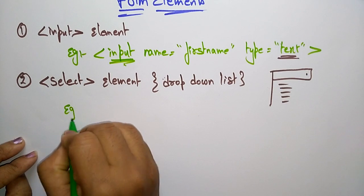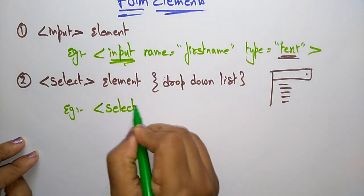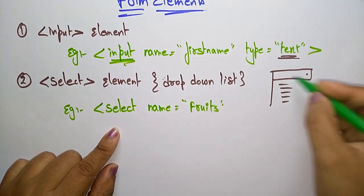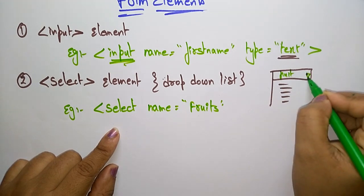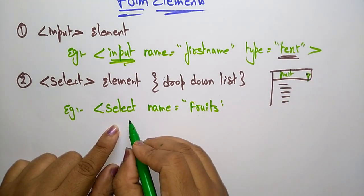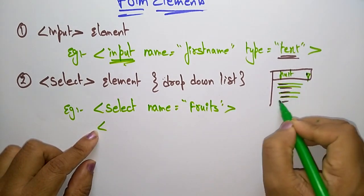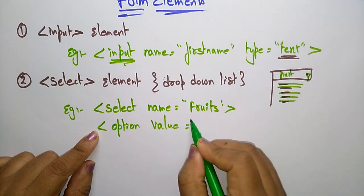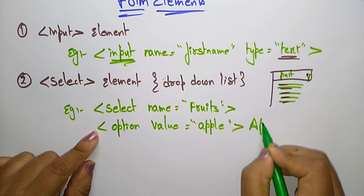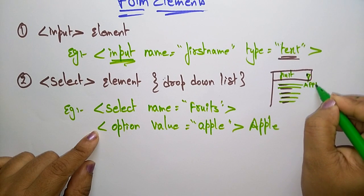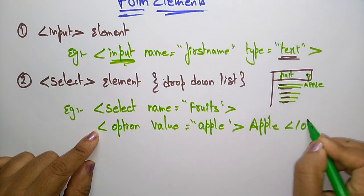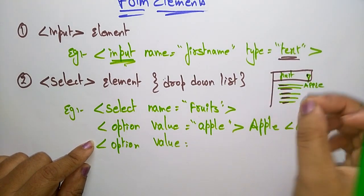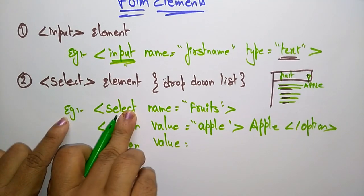Now let's see an example for the select element. We take the select tag with name equal to 'fruits'. Whenever you click on fruits, a drop-down menu appears. Using the select command, you write the values for this drop-down list using the option tag. For example, option value equal to 'apple' — apple will appear in the drop-down list.